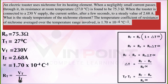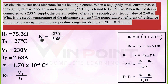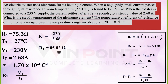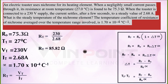Vt is 230 volts and It is 2.68 amperes, so Rt = 230 / 2.68. We are just applying Ohm's law: R = V/I. They have given the potential difference and current at that temperature, so we calculate Rt = 230 / 2.68 = 85.82 ohms. Now we have all the values needed.